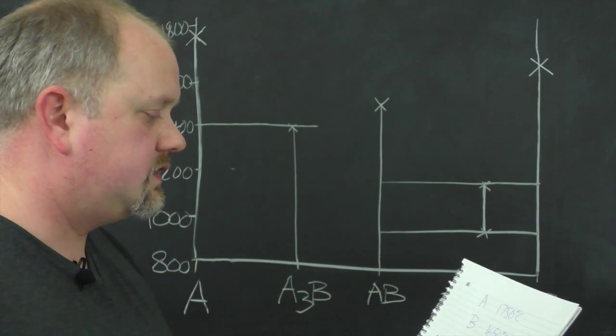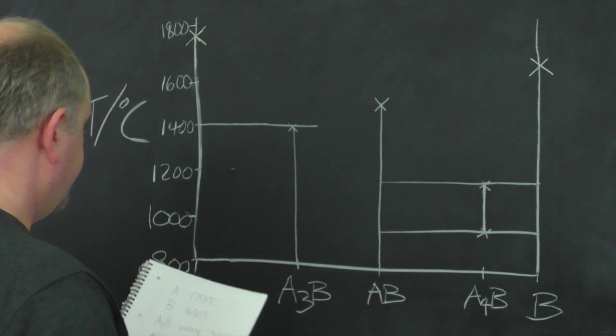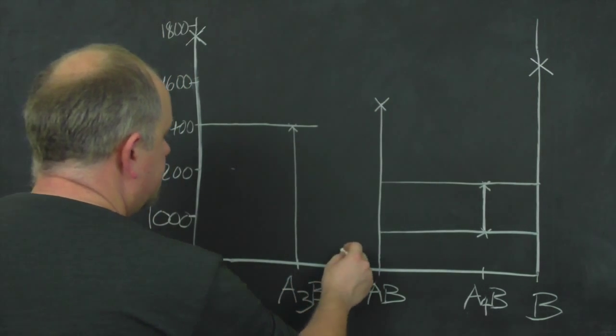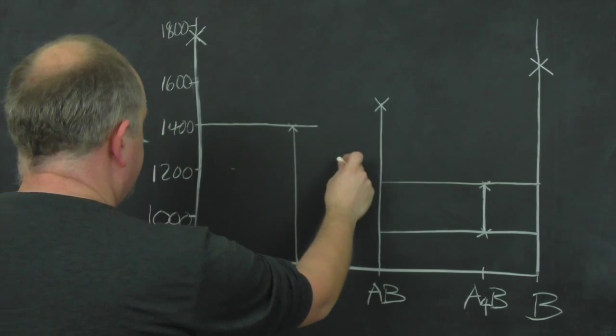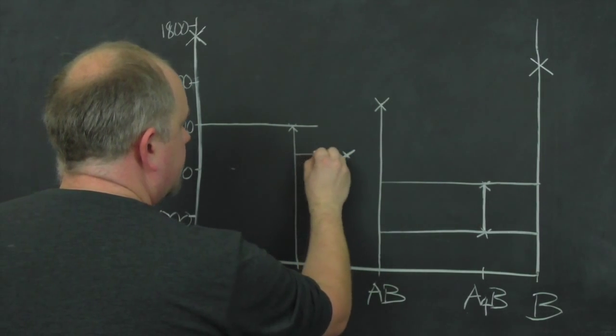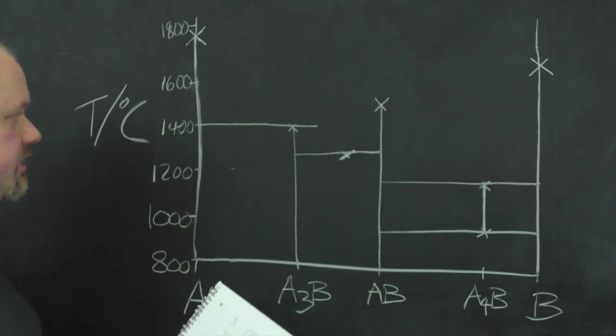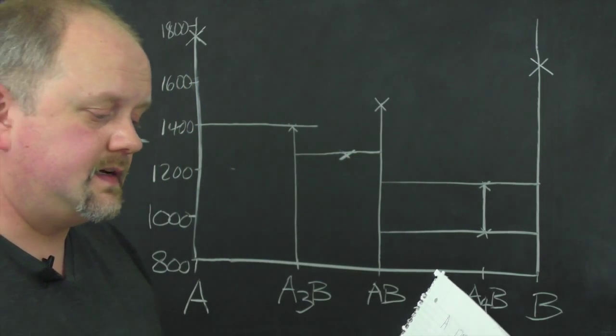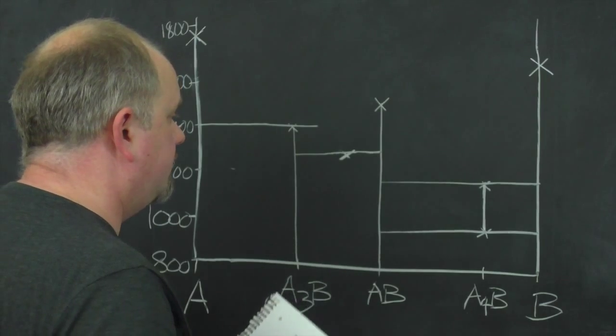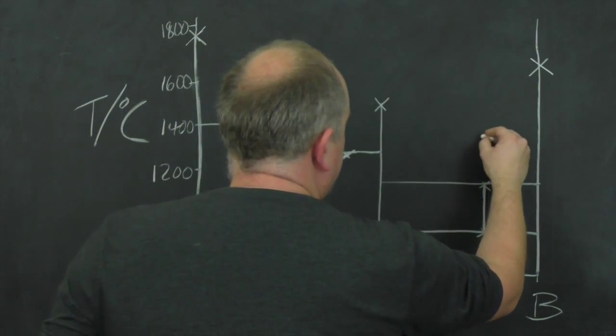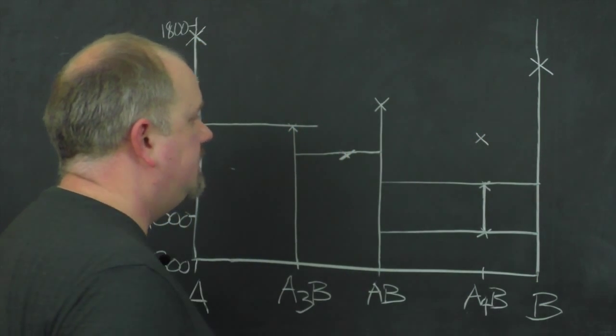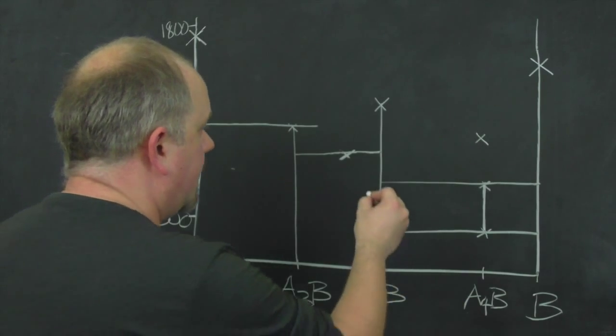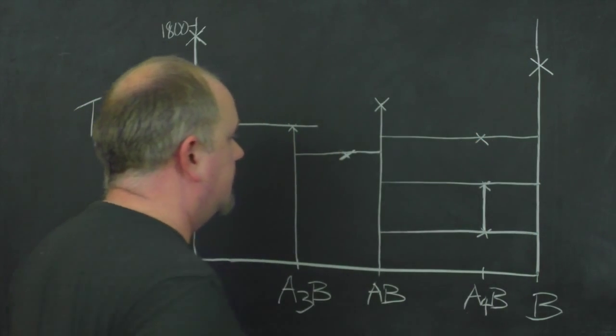So we've then got two eutectic points. The first one is at 40B, so somewhere about here, at 1300 degrees, should be about there. So if it's a eutectic, we've got a line going through it. And another eutectic at 80% B, 1350 degrees C. So that's directly above AB4, somewhere about there. And again, we know it's a eutectic, so we can put another straight line.